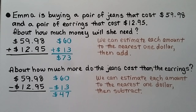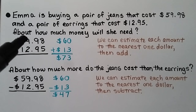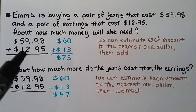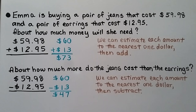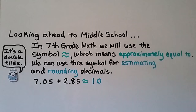Emma is buying a pair of jeans that cost $59.98 and a pair of earrings that cost $12.95. About how much money will she need? Estimating each to the nearest dollar: the 9 tells the 9 to go up but it can't, so it turns into a 0 and carries 1 to the tens place — $59.98 rounds to $60. The 9 tells the 2 to go up to 3, rounding to $13. Our estimate is $73. For how much more the jeans cost: $60 minus $13 is $47, so the jeans cost about $47 more than the earrings.